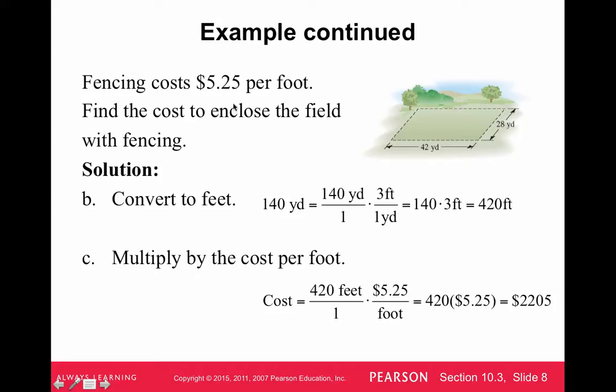So it says fencing costs $5.25 per foot though, and we know the perimeter is 140 yards. So we need to convert that number of yards into feet. So to do that, we know that three feet is one yard.